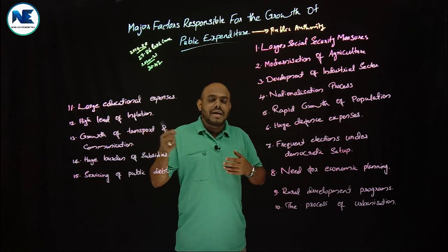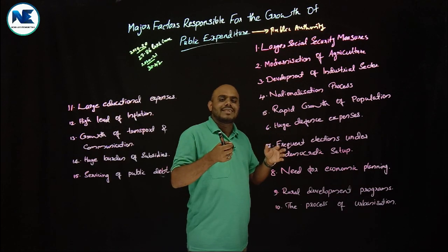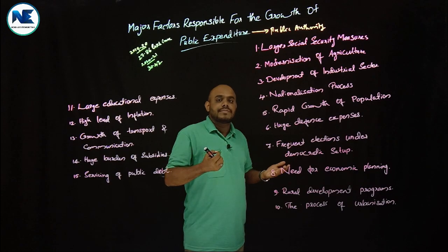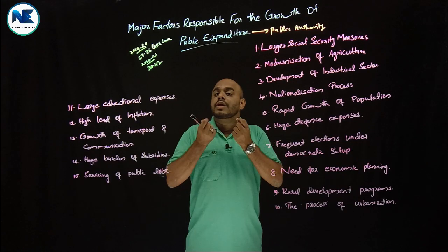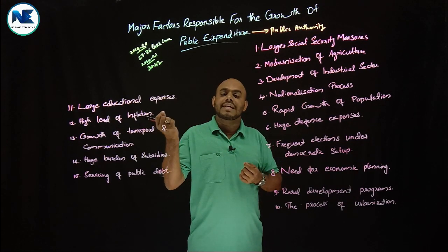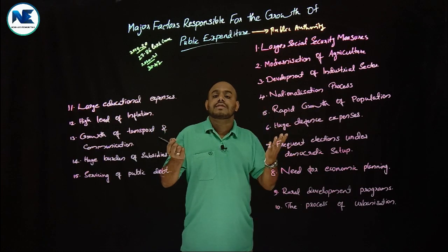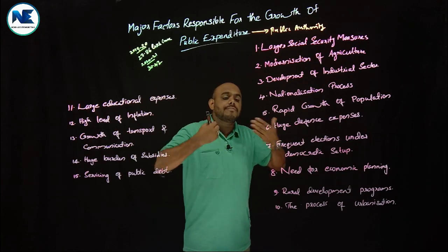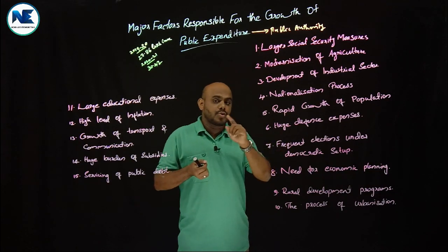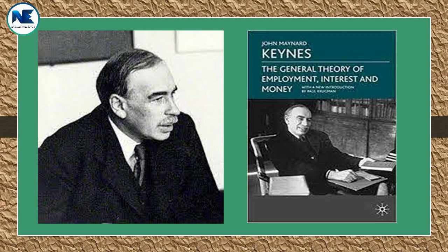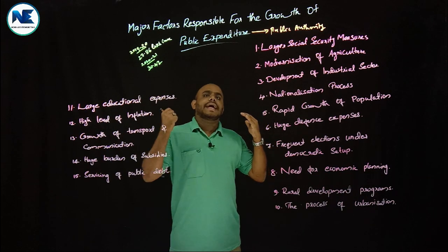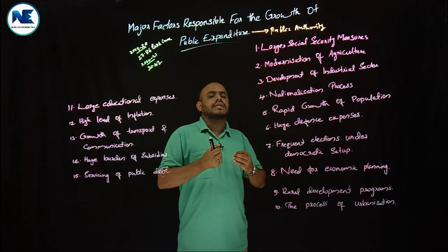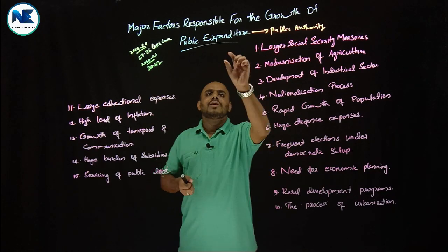The modern state plays a decisive role in the socio-economic development of the country — generating employment opportunities, providing measures including education, water, food distribution — actually trying to stabilize the economy and reduce the gap between the rich and the poor. The modern government is a welfare-oriented government. The Great Depression of the 1930s and Keynes' fiscal policy highlighted the significance of public financing. Keynes' general theory of employment, interest and money, published in 1936, reinforced this.